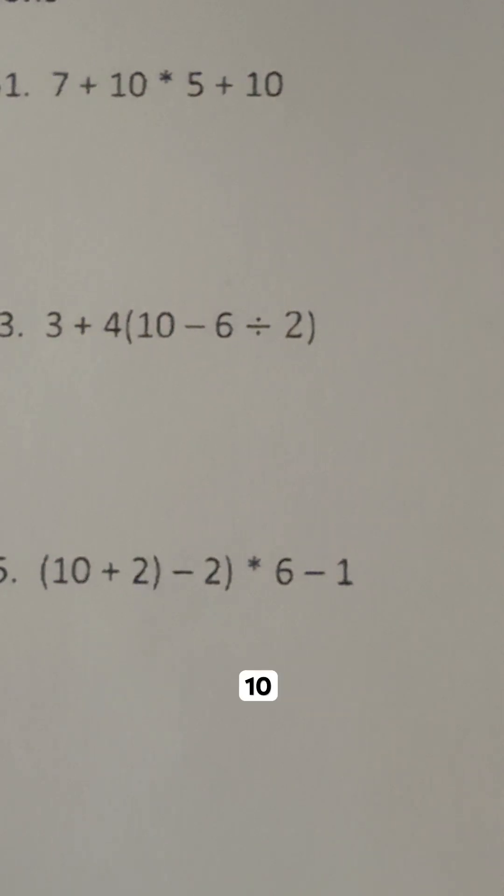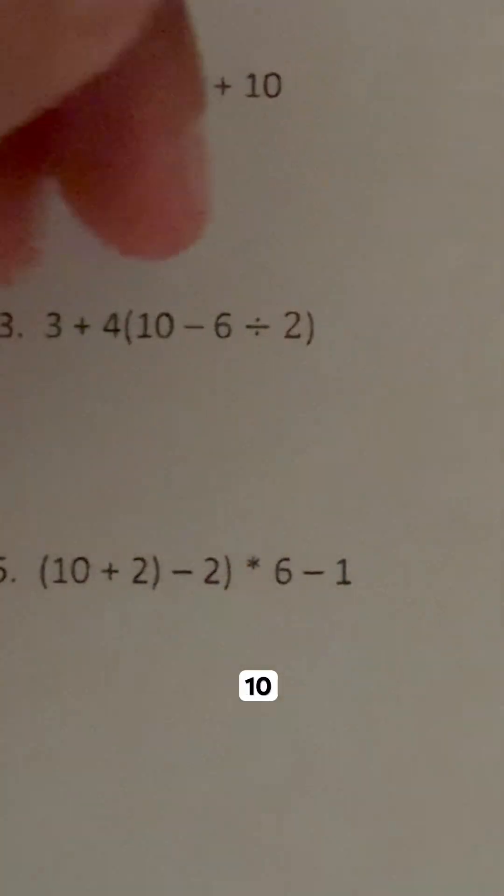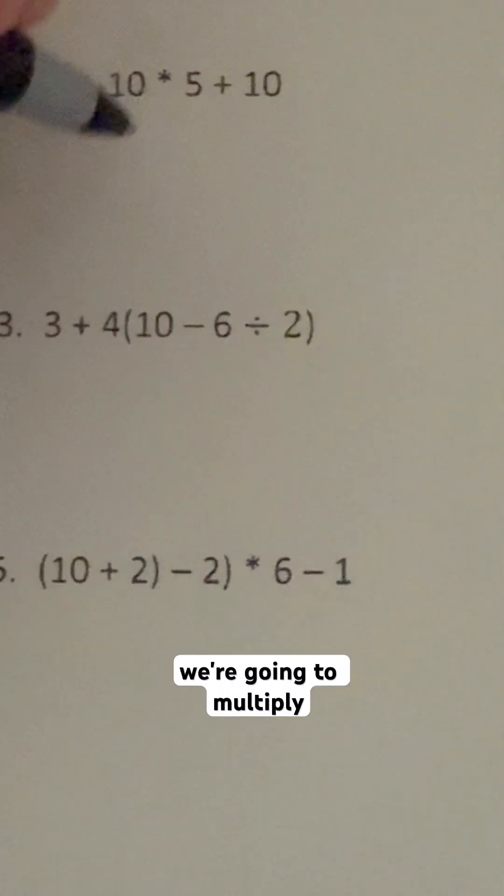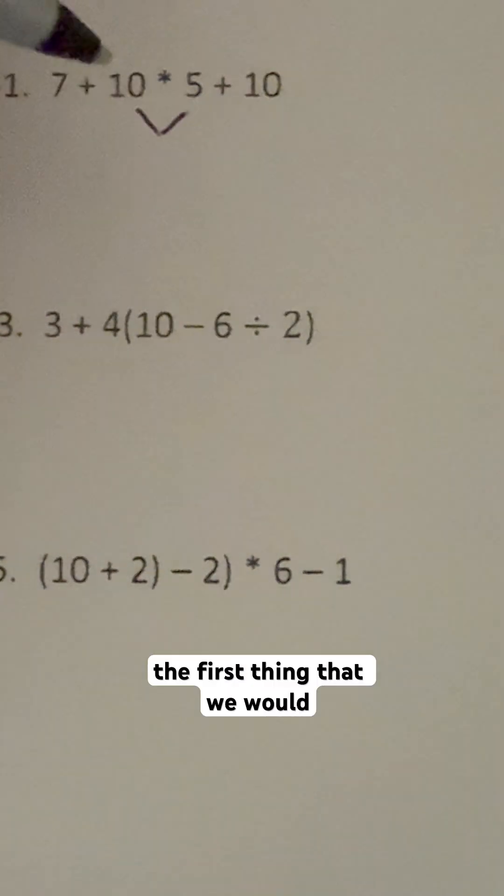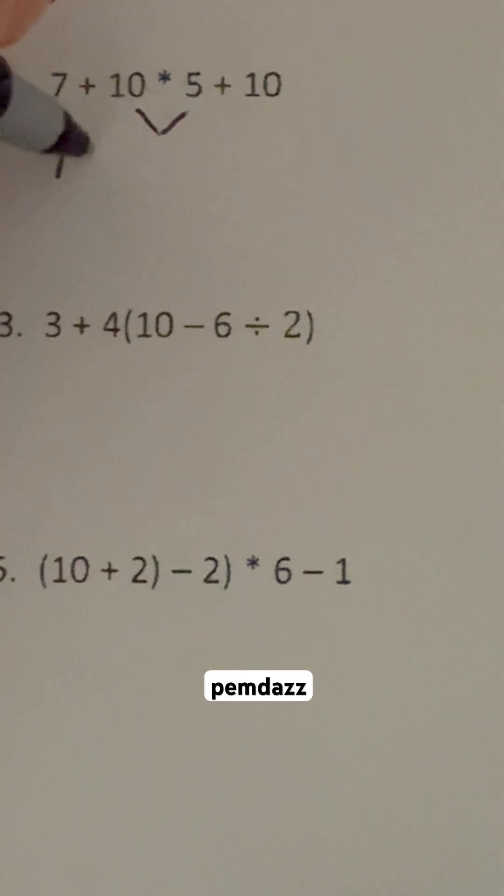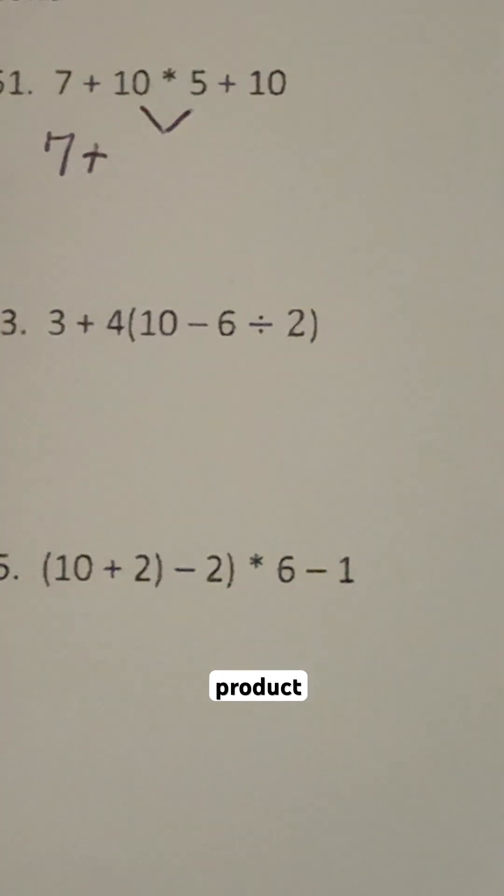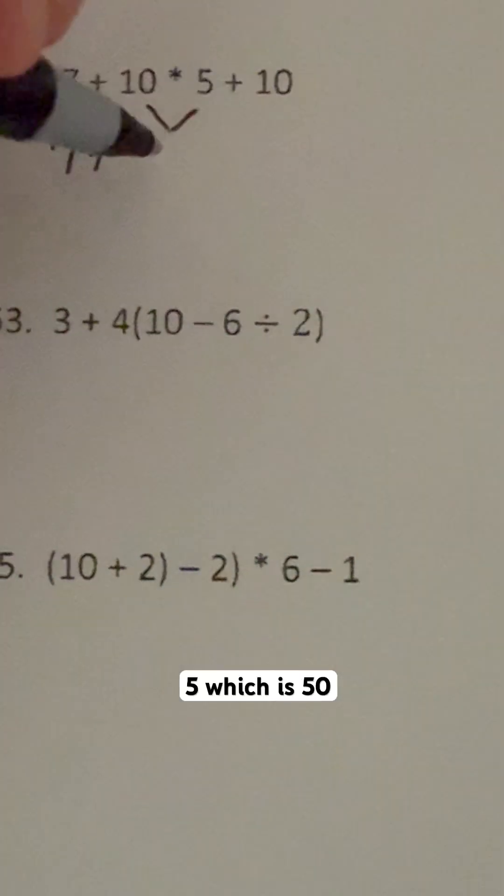So this one is 7 plus 10 times 5 plus 10. The first thing we're going to do is multiply, because that's the first thing that we would want to work on with PEMDAS. We're going to do 7 plus the product of 10 times 5, which is 50.